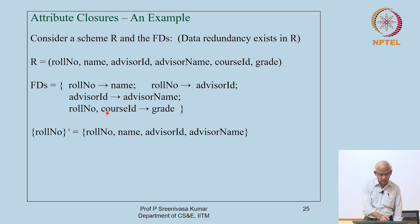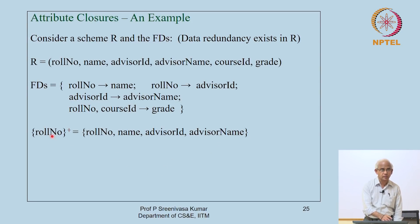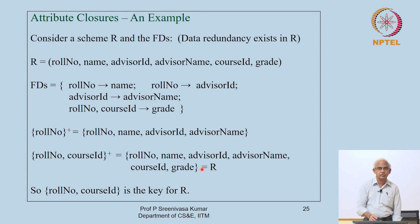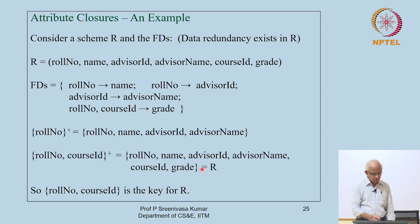Since course ID is not there, you cannot use that FD to get grade into this schema. So roll number in particular is not a key for this schema because it does not determine grade. A key determines all the attributes. Now if you take roll number and course ID together, all these attributes come into the picture, and that closure becomes equal to R.